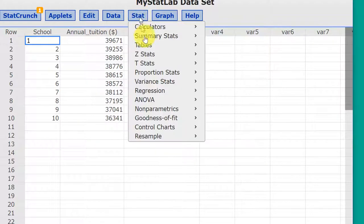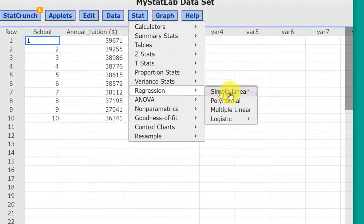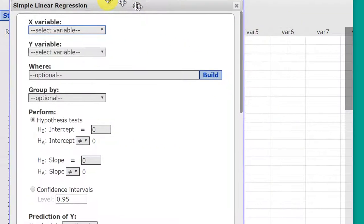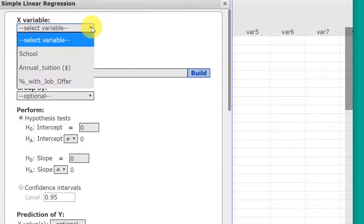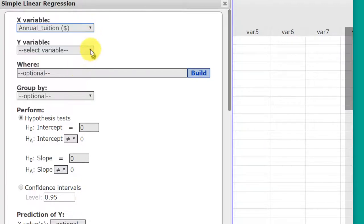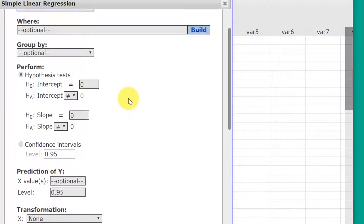We go to Stat, Regression, Linear Regression, and we're going to select our x variable, which is our tuition, our y variable, which is our job offer. Now here we've got to set up the hypothesis test. We're not worried about the intercept. We're just going to let that be whether or not it is zero or not. It's okay.